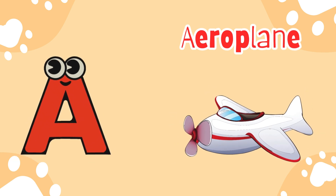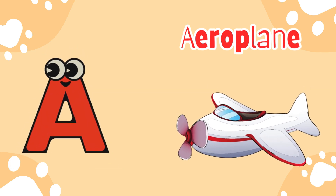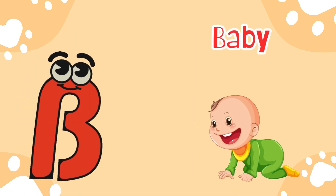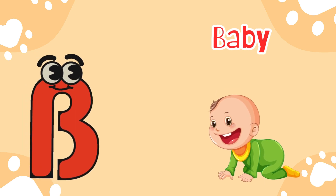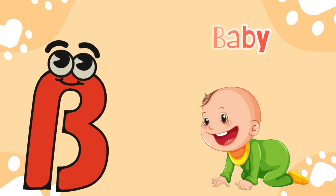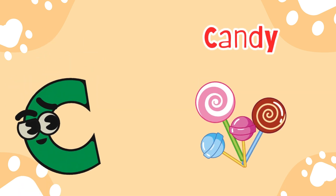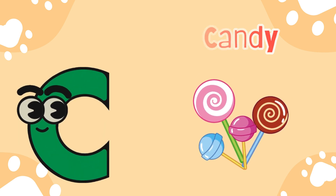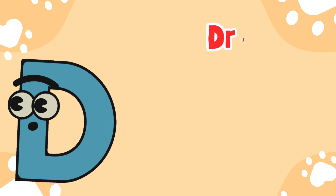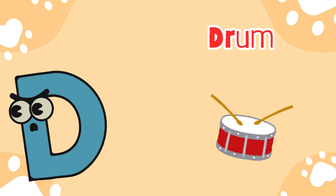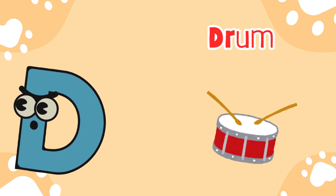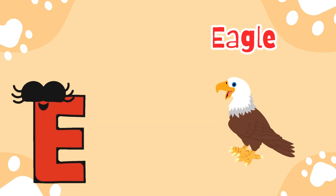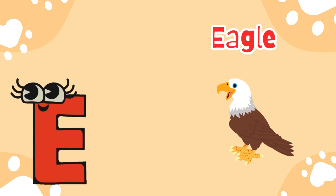A is for aeroplane. B is for baby. C is for candy. D is for drum. E is for eagle.